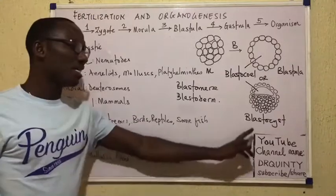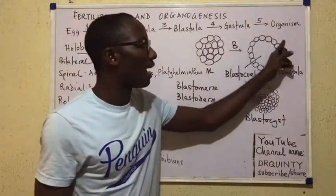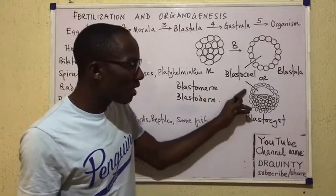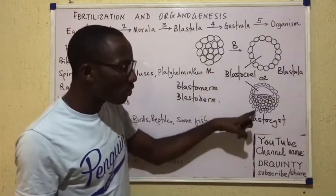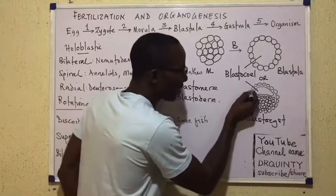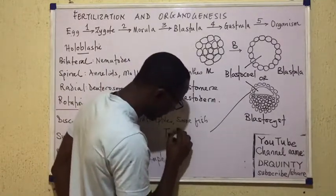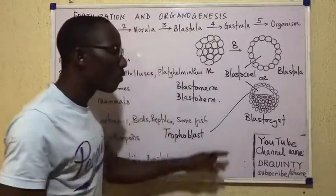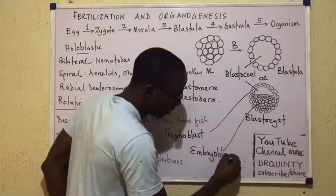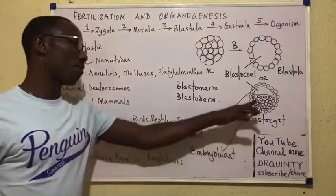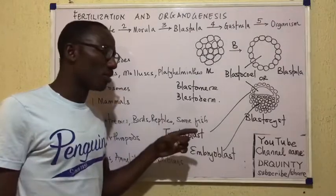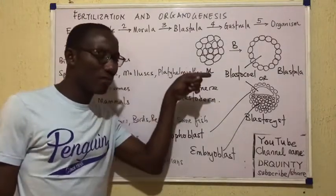However, in the case of the blastocyst, you don't have just an outer cell mass. There's an outer cell mass, an inner cell mass, and the cavity. The outer cell mass is called the trophoblast, and that is what will become the placenta in the long run. Whereas the inner cell mass is called the embryoblast, and that is what forms the embryo. The embryoblast and trophoblast are only present in the blastocyst, which is the blastula form of mammals.